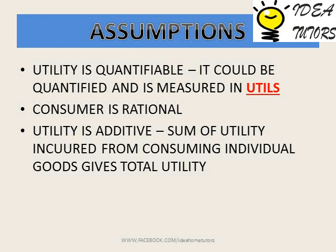The third assumption is that utility is additive. This means total utility is derived by summing the utility a person gets from consuming individual units of a good. For example, if a person consumes oranges, the total utility is the sum of the utility from the first orange, plus the second, third, and so on.